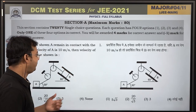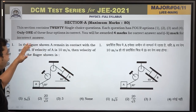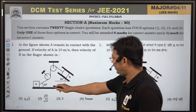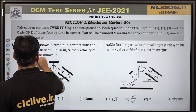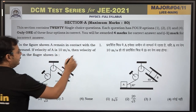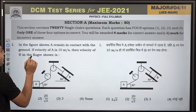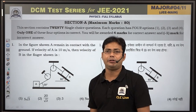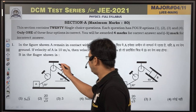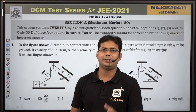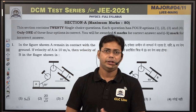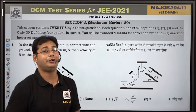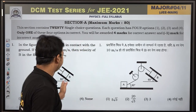First, let's talk about question number 1. What is written in the figure? A remains in contact with the ground. If the velocity of A is 10 meter per second, then what is the velocity of B? There are two different blocks A and B, connected by a string. We use a very simple concept: the string's length is constant, it doesn't change. This means the velocity of components along the string will be the same.